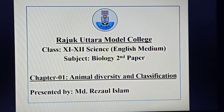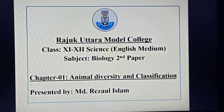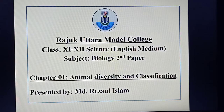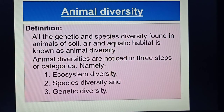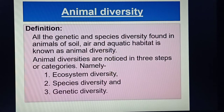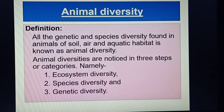My dear boys and girls, this is MD Rajavlislam, lecturer, Department of Zoology. Today we want to discuss about animal diversity and classification of the vast animal kingdom. Animal diversity refers to all the genetic and species diversity found in animals of soil, air, and aquatic habitat.